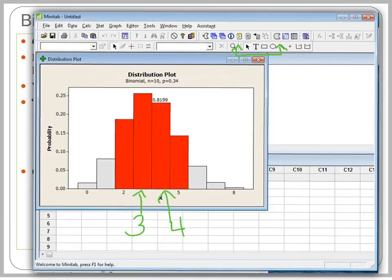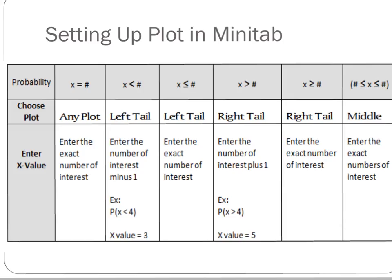To help with those adjustments, I drew up a chart showing which curves to choose and where to set your X values. When choosing an exact value, enter the exact number of interest. For less than or less than or equal to, use the left tail. For greater than or equal to, use the right tail. You only need to change your number of interest when you have strict inequalities: for less than, subtract one; for greater than, add one. I hope this helps you use the distribution plot — I actually like this method better than the calc method. I hope it makes your stats homework a little easier.